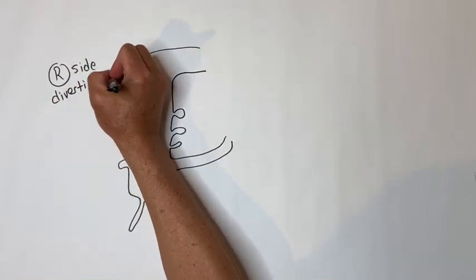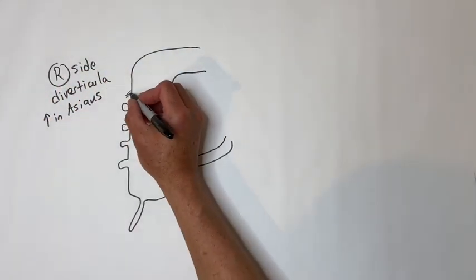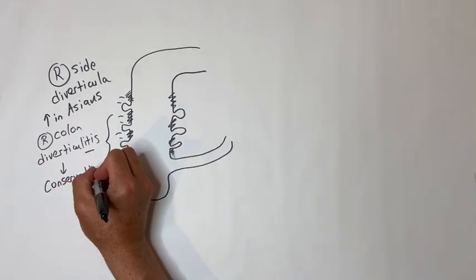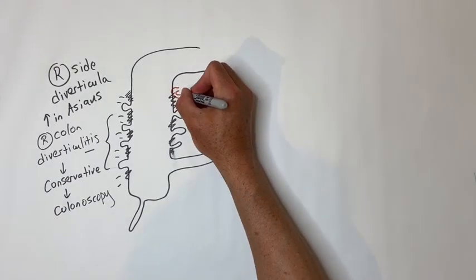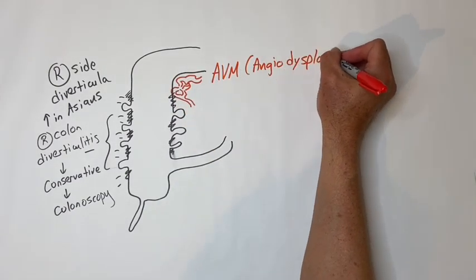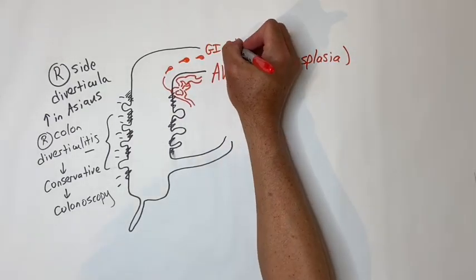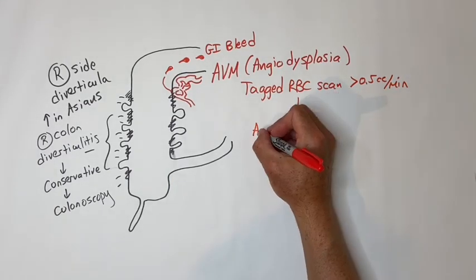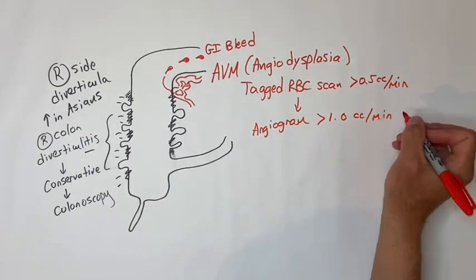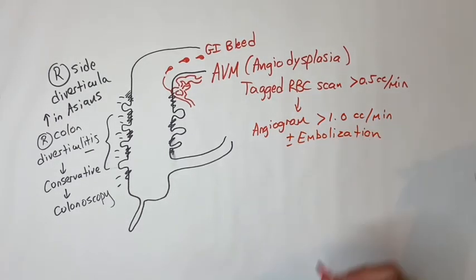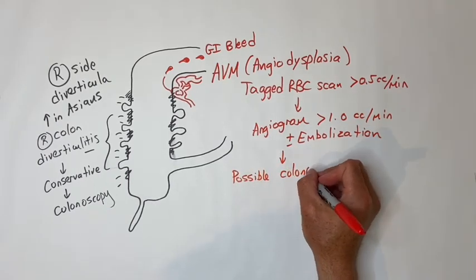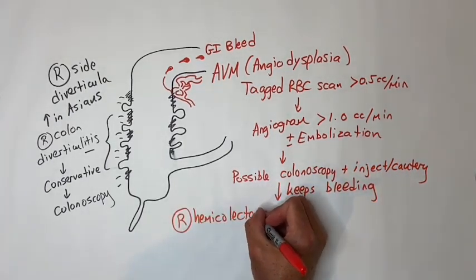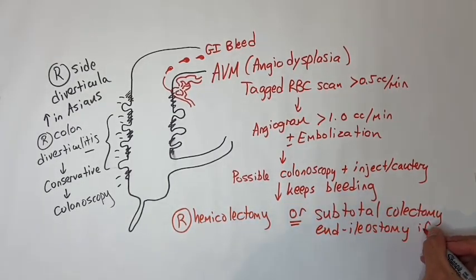Right-sided colon diverticula is unusual but more commonly found in Asian populations. Actual diverticulitis of the cecum or right colon can occur, usually responds to conservative measures, but once resolved you need a colonoscopy to rule out cancer. An AVM, also known as angiodysplasia of the right colon, can be a source of GI bleed. A tagged RBC scan can pick up bleeding of 0.5 cc per minute or more; an angiogram needs 1 cc per minute or more. If a bleeding scan shows blush in the right colon, try angiogram and embolization. Colonoscopy with injection or cautery may also work. If neither works and bleeding continues, do a right hemicolectomy or subtotal colectomy if the source is unclear.